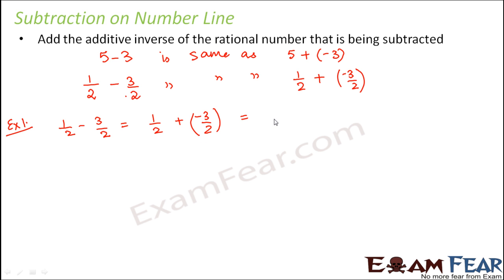Here we have the same denominator, so this would be 2. The numerator would be 1 plus minus 3, which equals 1 minus 3 divided by 2, which is equal to minus 2 by 2, which is equal to minus 1. So when you subtract 3 by 2 from 1 by 2, you get minus 1.